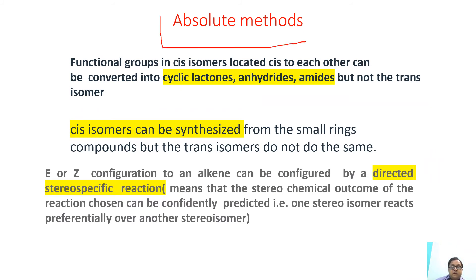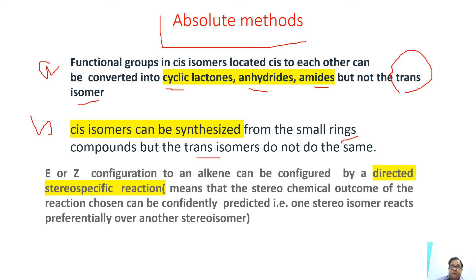Absolute methods can be worked out using one of three approaches. In the first, we convert the functional groups in the cis isomer — which are located on the same side — into cyclic lactones, anhydrides, or amides. This is not possible with trans isomers. In the second approach, cis isomers can be synthesized from small-ring compounds but trans isomers cannot. Additionally, trans isomers can be configured by a directed stereospecific reaction, which we will discuss in detail in the last section of this chapter.